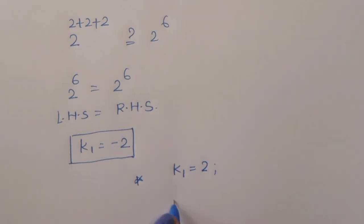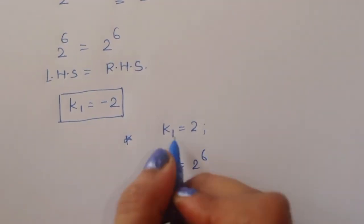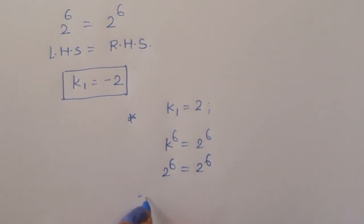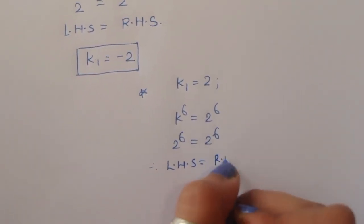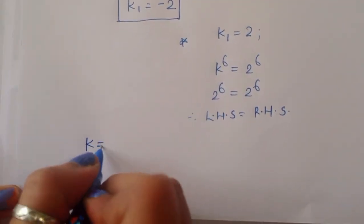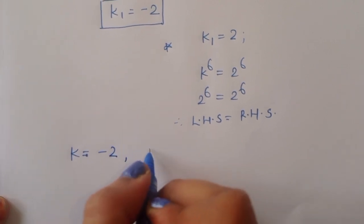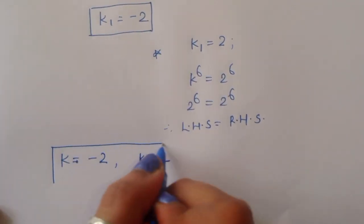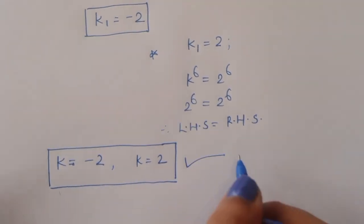We can see that k power 6 equals 2 power 6 is satisfied. So in the first case the value of k is minus 2, and in the second case the value of k is 2. Both are correct solutions. Thank you.